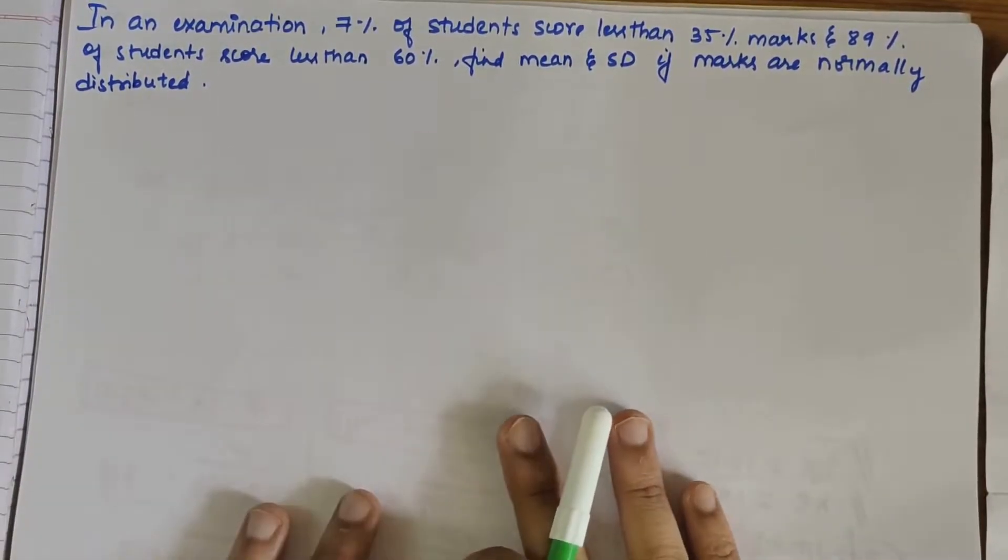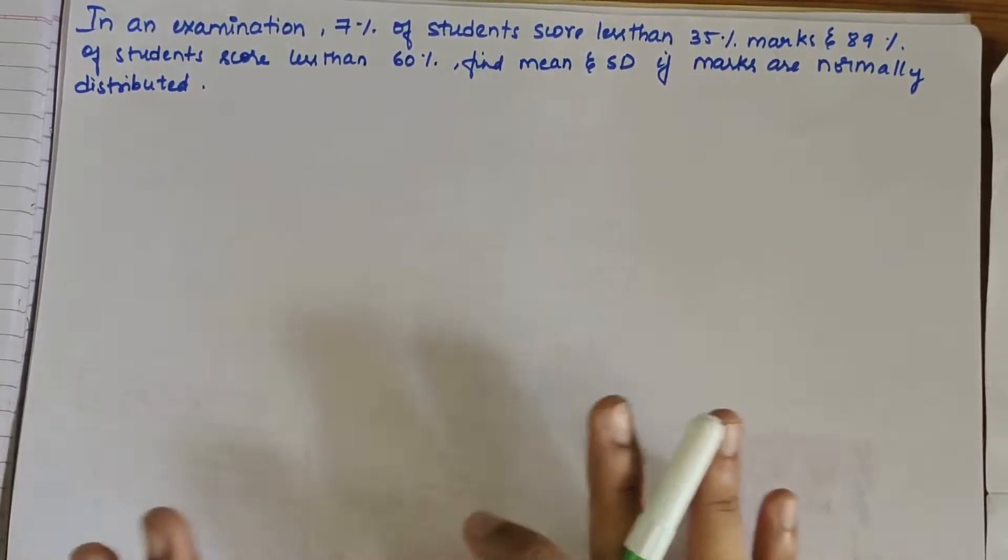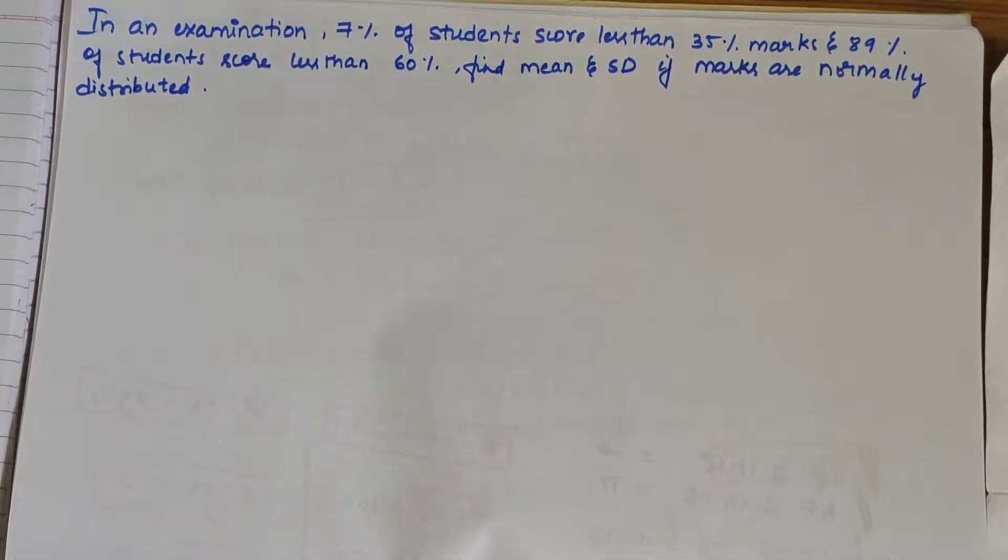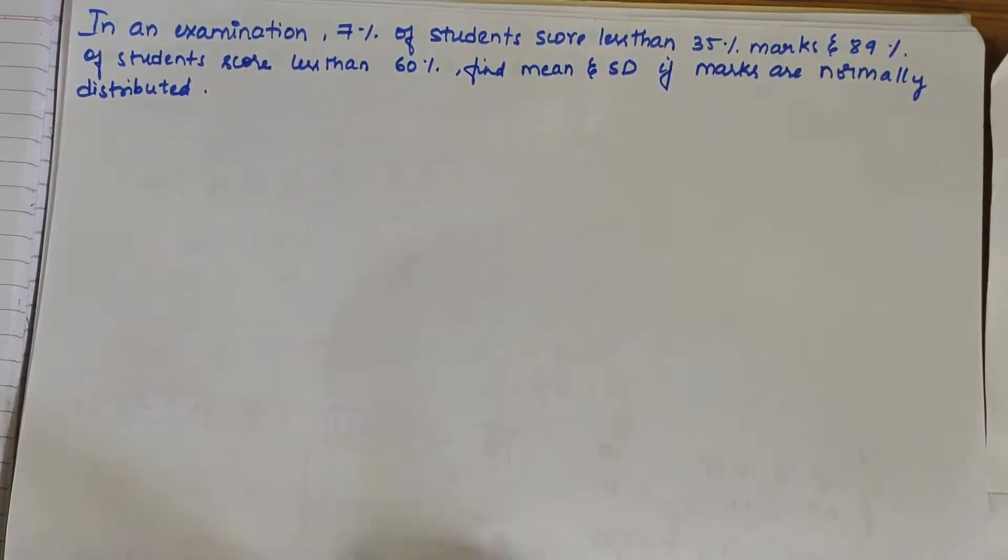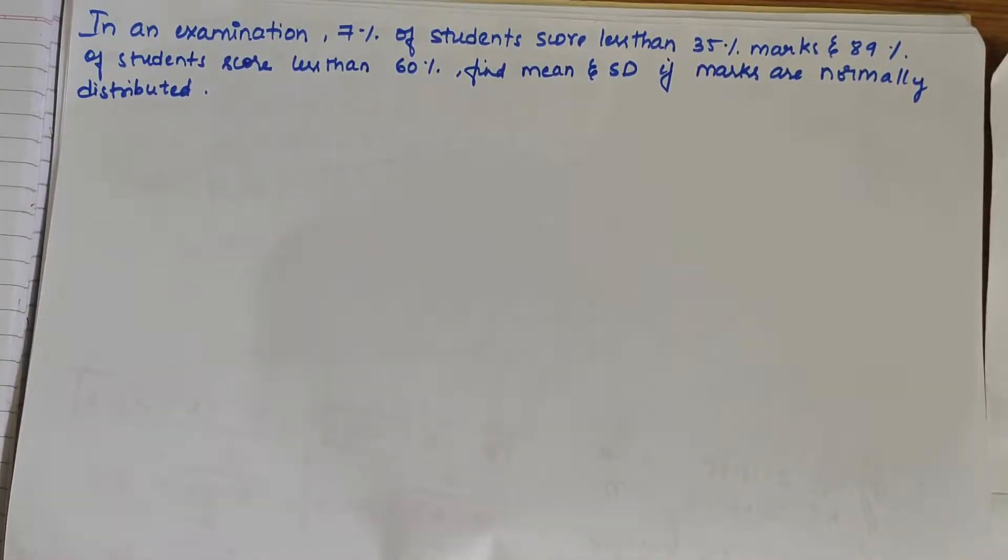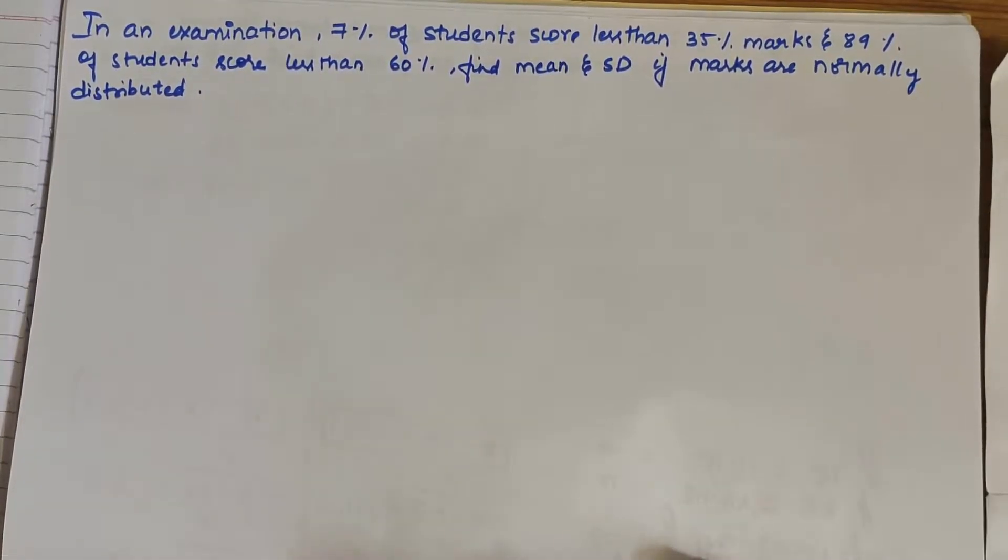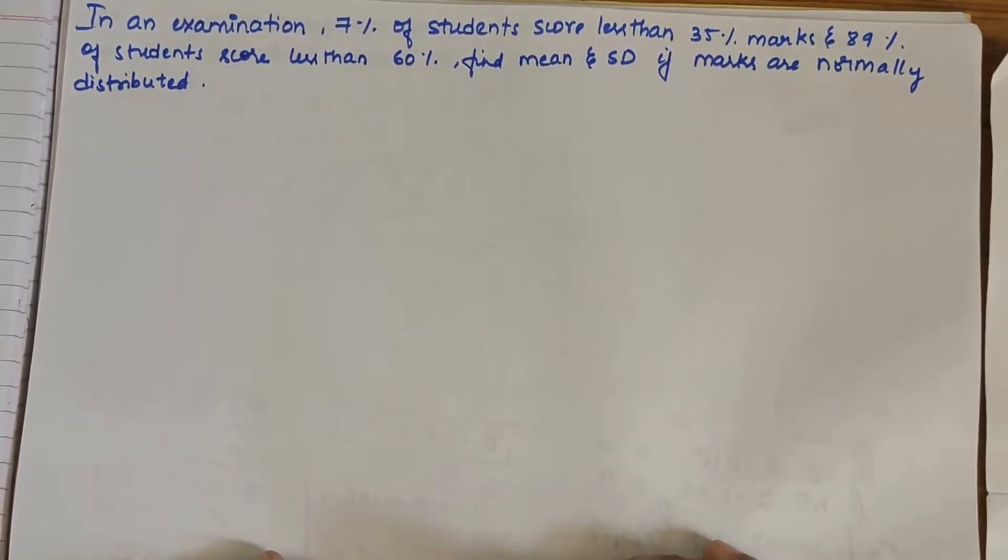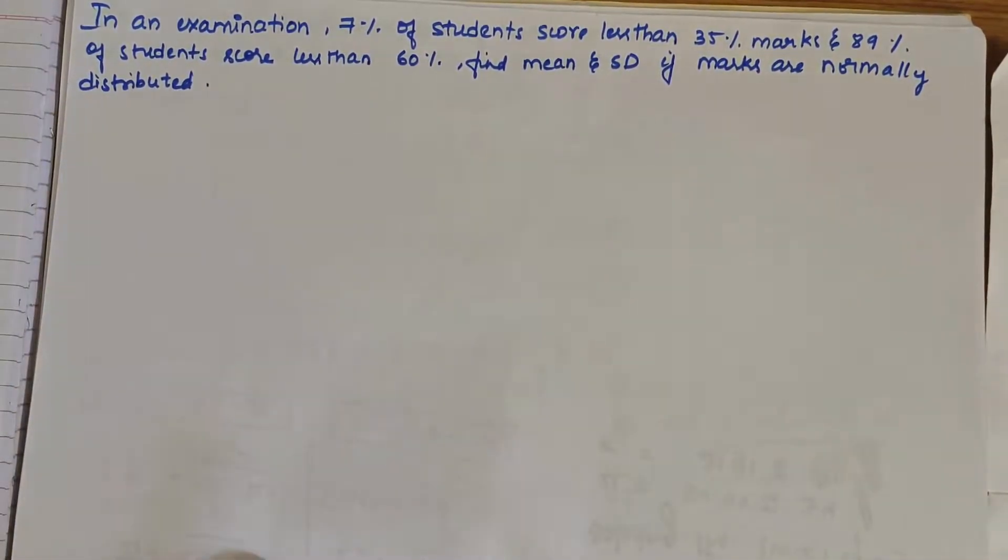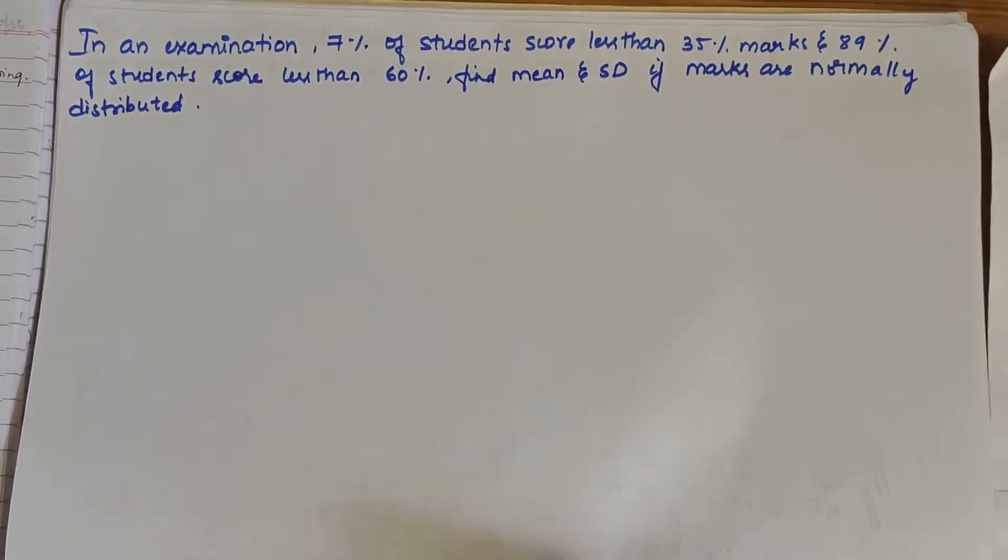In this video we'll be solving a numerical based on the normal distribution. The problem statement says that in an examination, 7% of students score less than 35% marks and 89% of students score less than 60% marks. We have to find the mean and standard deviation if marks are normally distributed.